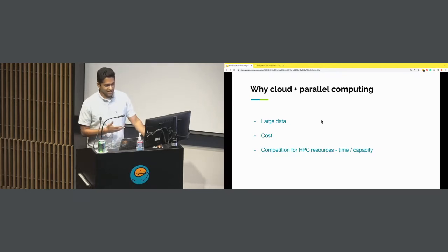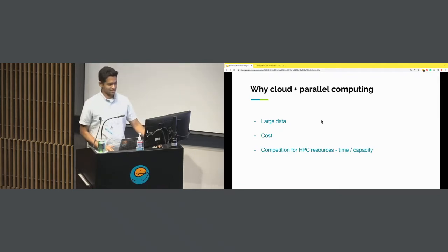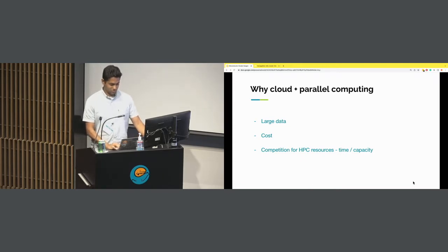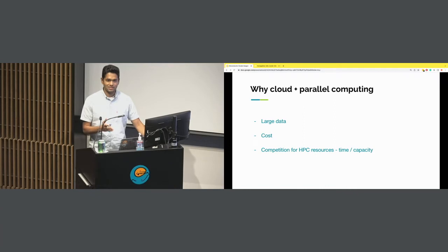So why do we need cloud and parallel computing? Firstly, because there's a lot of data, and cost is also important — we want to pay for what we use. The competition for high-performance computing resources at institutions is usually pretty bad. You have to fight with your colleagues; you can't get time on the compute node you want, and so on.